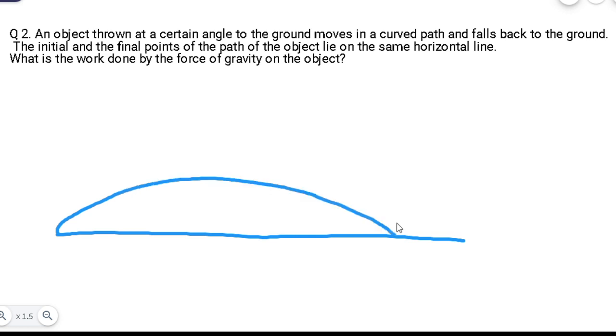Just suppose, यह object की initial position A है, और यह object की final position B है. अभी जो horizontal line है एकदम straight है.